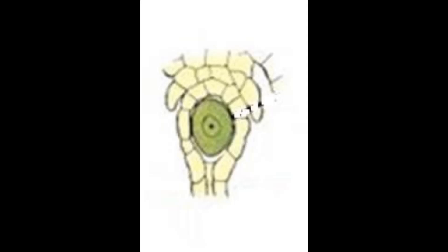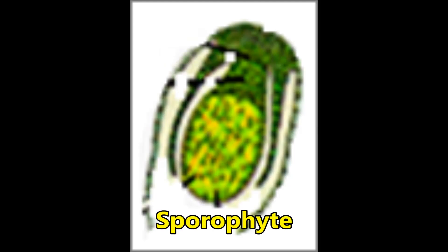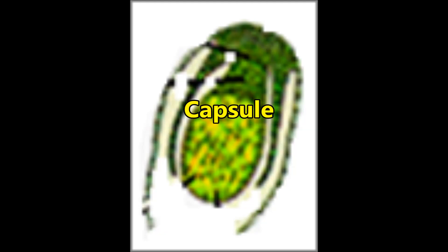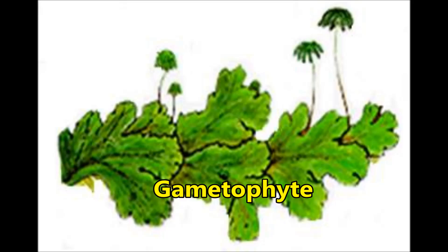Sporophyte: The zygote undergoes cell division during development and forms the sporophyte. The sporophyte is differentiated into a foot, seta and capsule. The capsule is surrounded by a layer called the jacket. After meiosis, spores are produced within the capsule. The spores germinate to form free-living gametophyte.